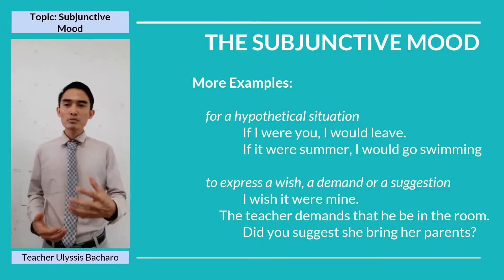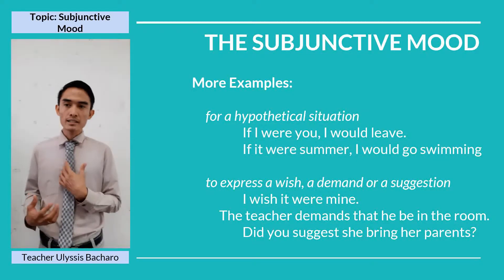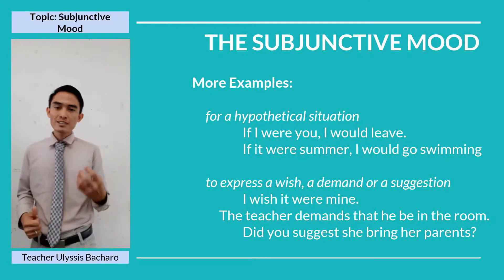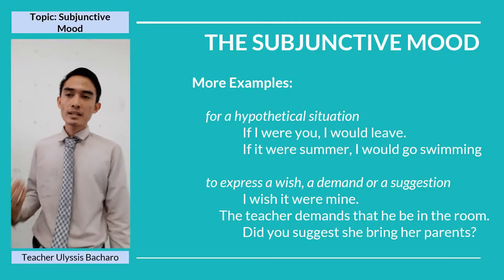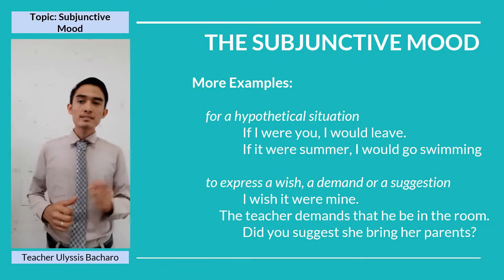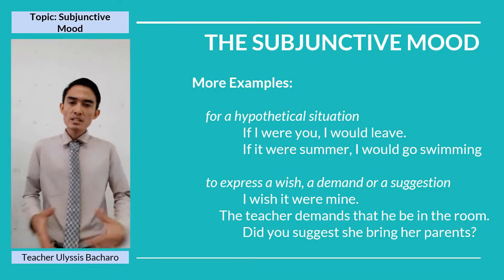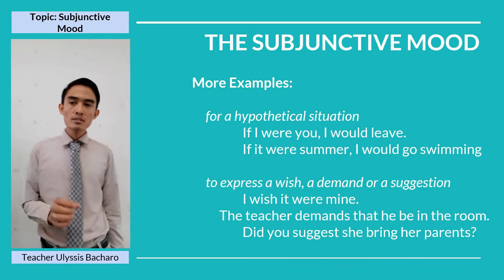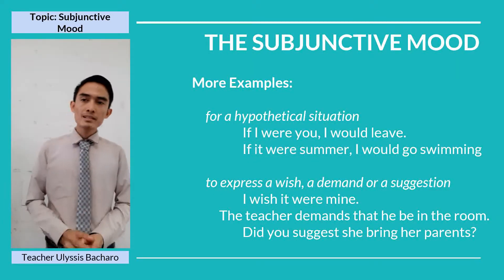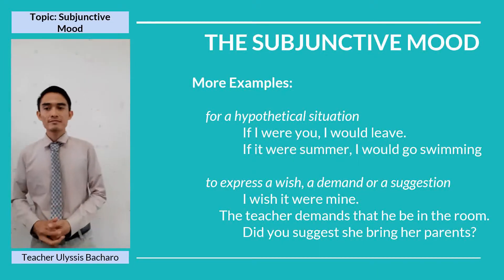In the first two sentences, 'If I were you, I would leave' — I use 'were' for the subject 'I.' And 'If it were summer, I would go swimming' — I use 'were' for the subject 'it.' For 'I wish it were mine' — 'it were mine.' 'The teacher demands that he be in the room' — we use 'be.' Normally we say 'he is in the room,' but here we use 'be.' And 'Did you suggest she bring her parents?' Normally you would say 'she brings her parents,' but since it is in subjunctive mood, 'she bring' without an S.